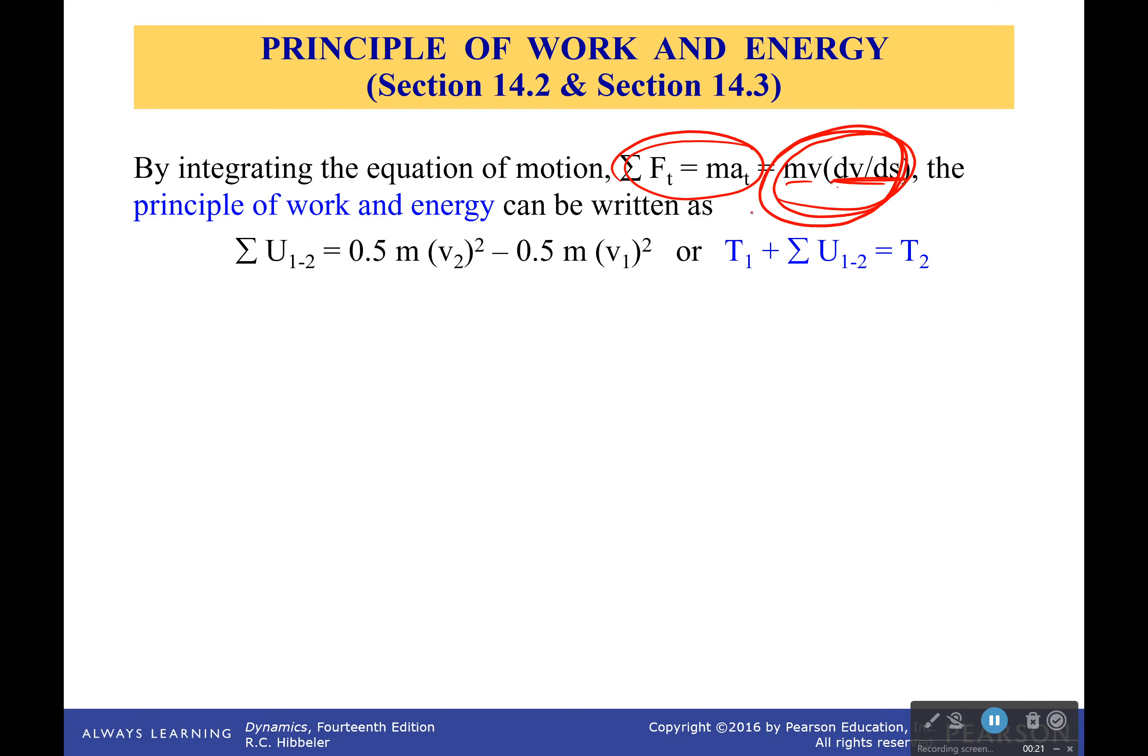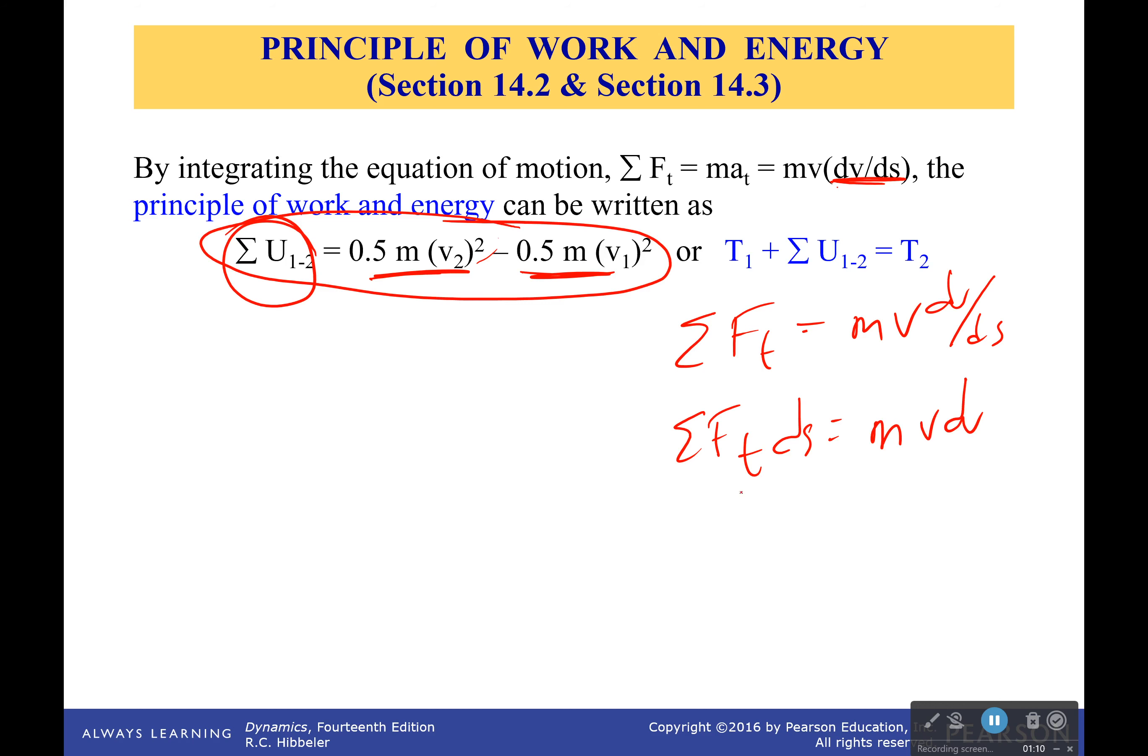Well sum of the forces in the tangential is equal to mass velocity dv ds. Multiply both sides by ds. Sum of the forces tangential ds is equal to mass velocity dv. Integrate both sides and if I have force times the distance well that's work. So that's where that becomes work. If I integrate this well I want to get that one half mv squared and I go from some initial velocities to some final velocity and that's why I have this.